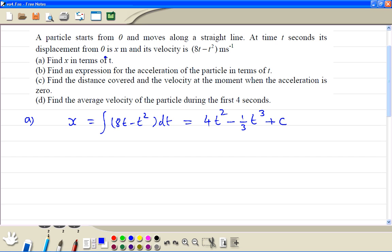Because we're starting from the origin, when t is 0, x is 0. This means 0 equals 0 minus 0 plus c, so c is equal to 0. So the expression for x is just 4t² minus 1/3 t³.